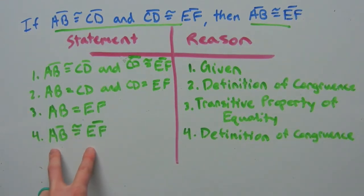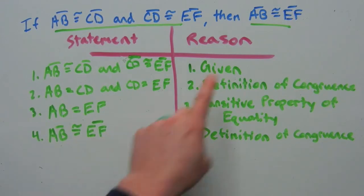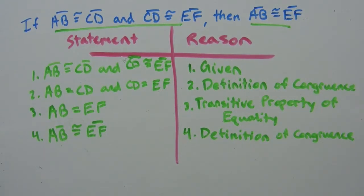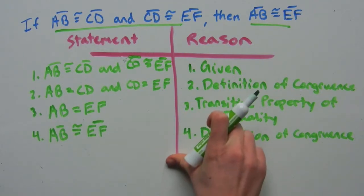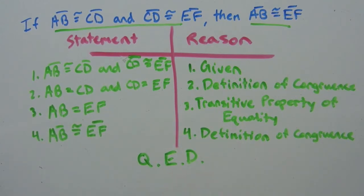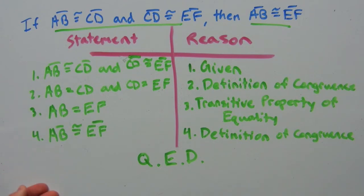And now we have what we wanted to prove: that segment AB is congruent to segment EF, all based on what was given. A good rule of thumb is writing when you're finished to prove, and that can be shown with QED. QED is an abbreviation for a Latin phrase, 'quod erat demonstrandum,' meaning 'which is what had to be proven.' So QED — what had to be proven. It's just a good rule of thumb to use when finishing a proof so that nobody expects you to keep going.